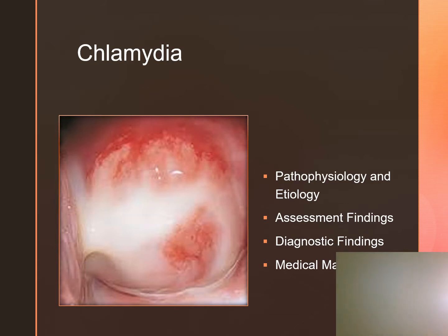Chlamydia is the most common reportable STI. It's spread by sexual intercourse, genital contact with sexual intercourse without penetration, and transmission to the infant during birth, in addition to auto-inoculation — where the client touches infected secretions and then transmits them without washing hands. These clients will have a sparse clear urethral discharge, redness and irritation of the infected tissue, and burning on urination.